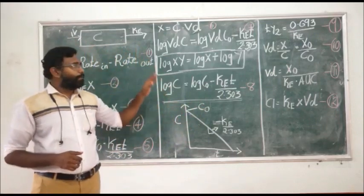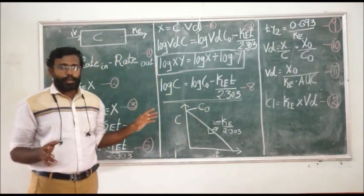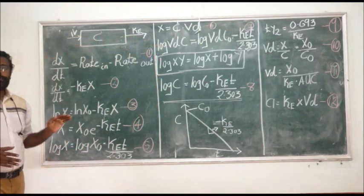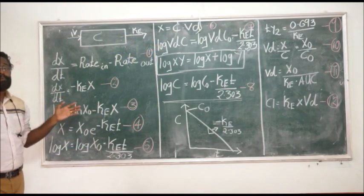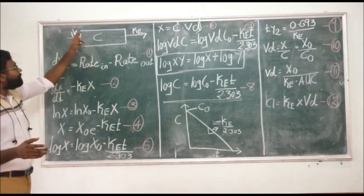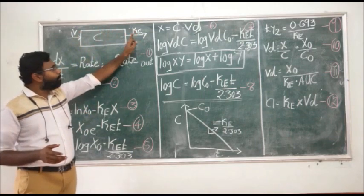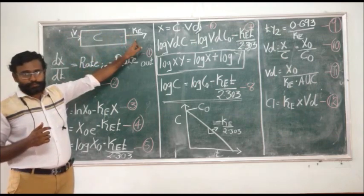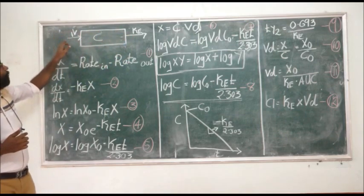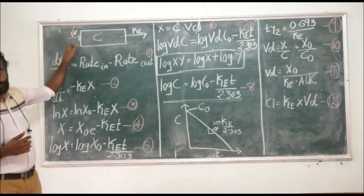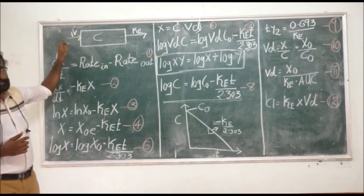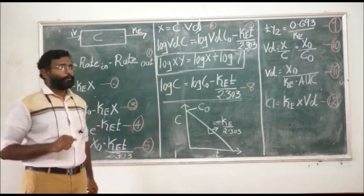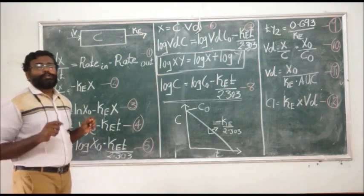For the ease of understanding, I have written out the derivation step by step. First, you should be able to identify the schematic representation. It is a one-compartment open model with IV bolus administration and elimination. The drug enters the compartment and elimination takes place. This is the schematic representation of the one-compartment open model for IV bolus administration and elimination.